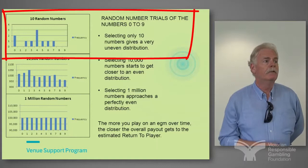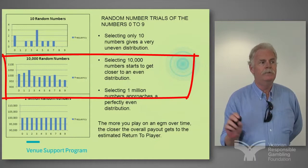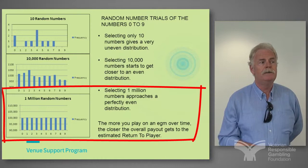Note the first graph on the top there. The second one starts to approach a smoother graph by selecting 10,000 of those numbers, putting them back each time and selecting another one. And you don't actually get a smooth progression until you get to a million draws — when you have a million draws you start leveling out to what you would expect.